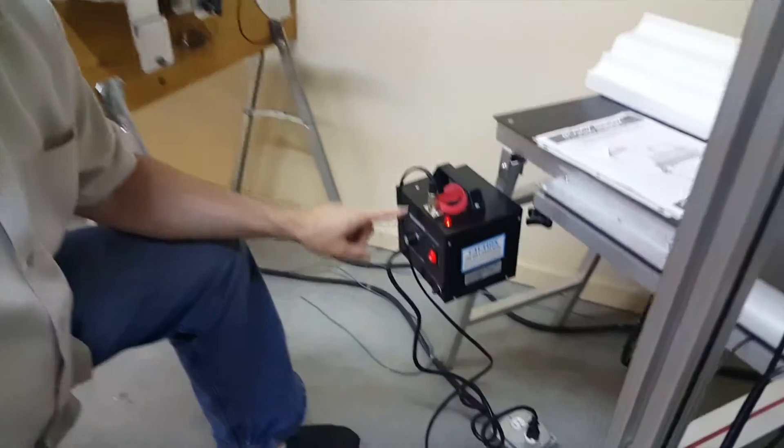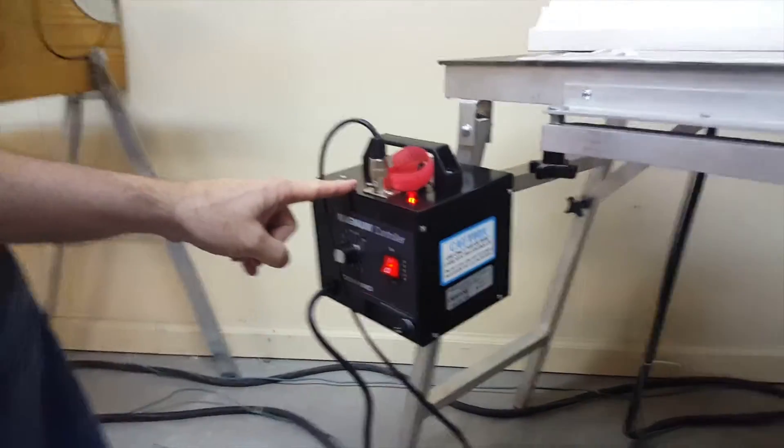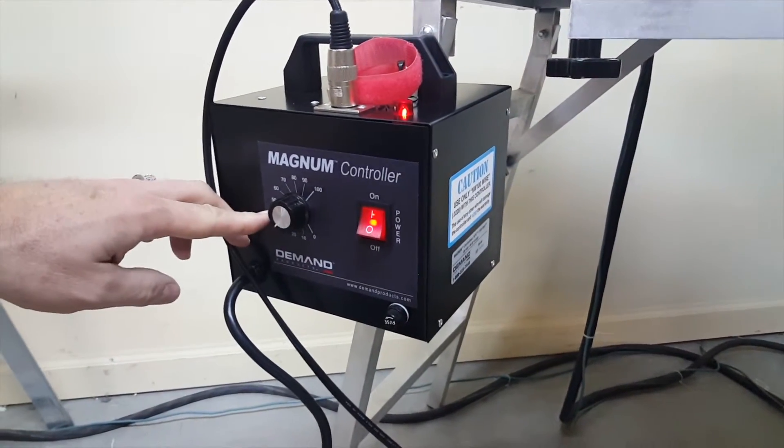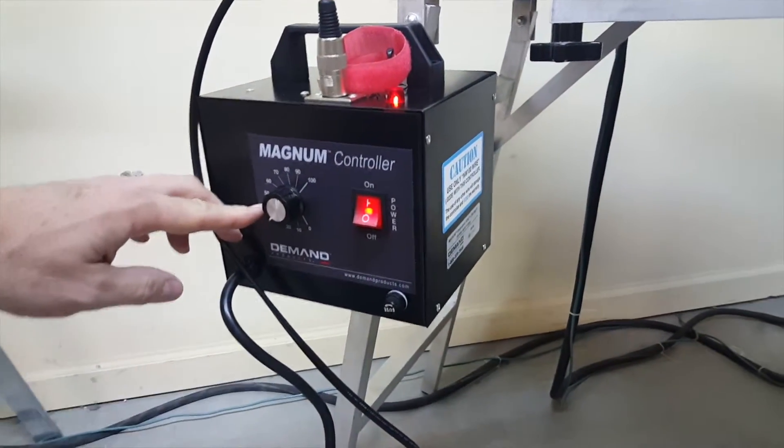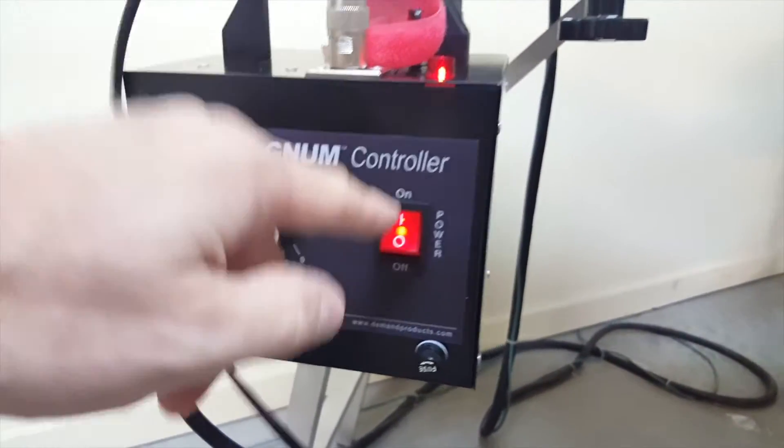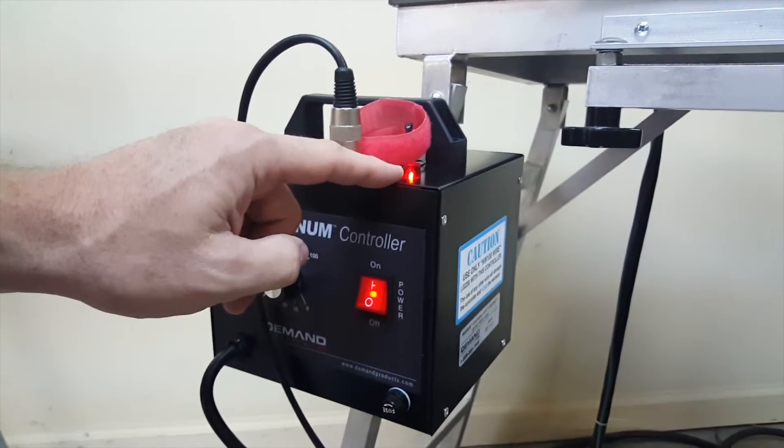All right, so I've got a brand new out-of-the-box Magnum controller. You can see that the dial is a little bit different than the one you have. This is the latest version of controller. You've got the power and you've got the power indicator light.